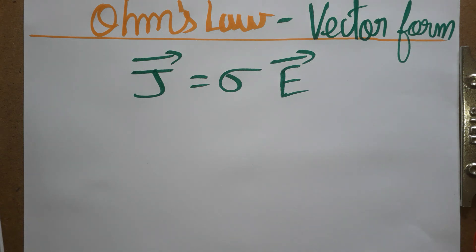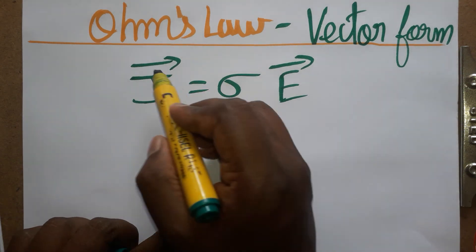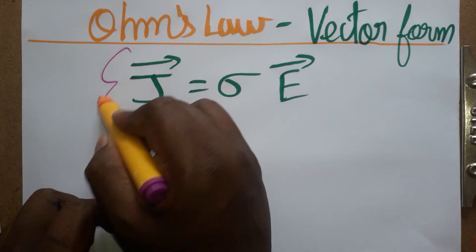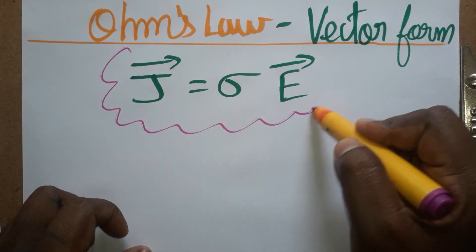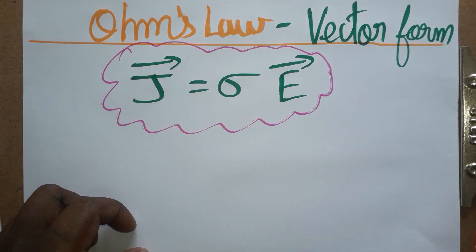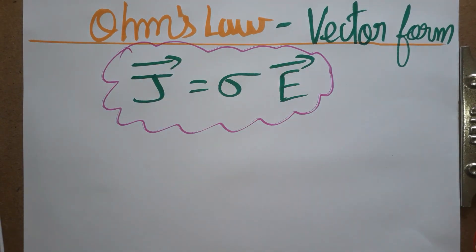Today we are going to see the vector form of Ohm's law. This is the vector form of Ohm's law, and today I am going to teach you how we derive it. It is also called the microscopic form of Ohm's law.